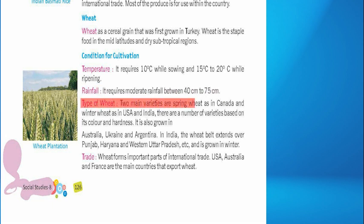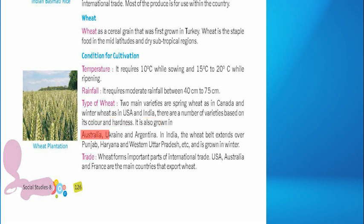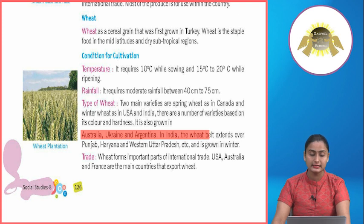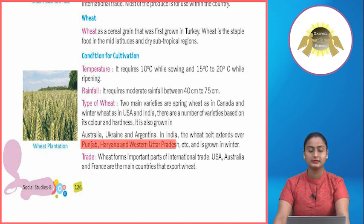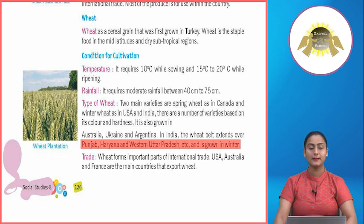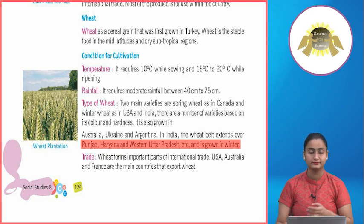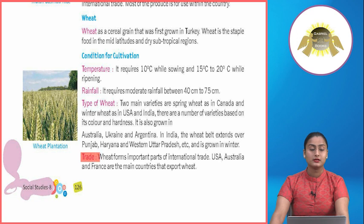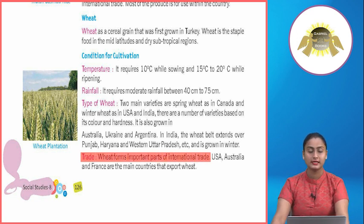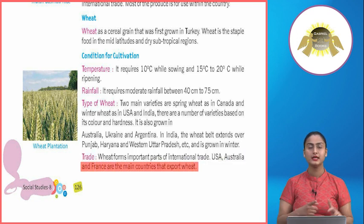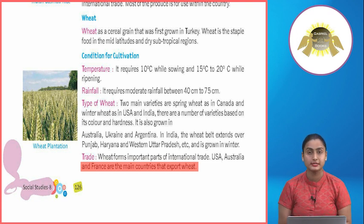Two main varieties are spring wheat (as in Canada) and winter wheat (as in USA and India). It is also grown in Australia, Ukraine and Argentina. In India, the wheat belt extends over Punjab, Haryana and Western Uttar Pradesh and is grown in winter. Trade: Wheat forms an important part of international trade. USA, Australia and France are the main countries that export wheat.